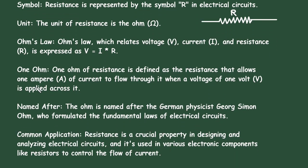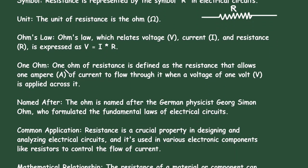One ohm: One ohm of resistance is defined as the resistance that allows one ampere of current to flow through it when a voltage of one volt is applied across it. That means 1 ohm is equal to 1 ampere of current.